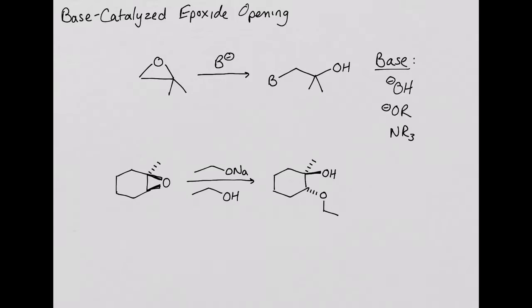If we look at the mechanism for this transformation, we can understand the observed stereochemical outcome and regiochemical outcome. In the first step, the negatively charged ethoxide ion attacks the good electrophile of the epoxide.